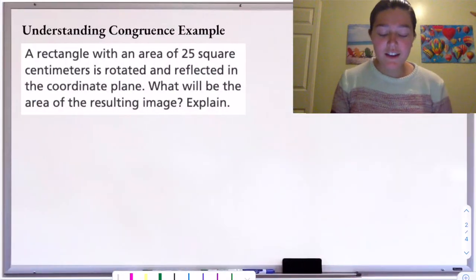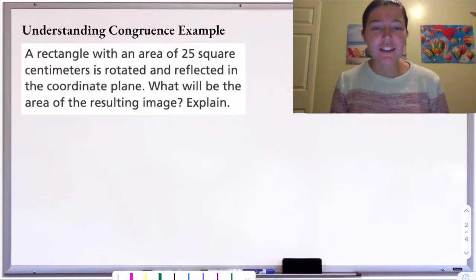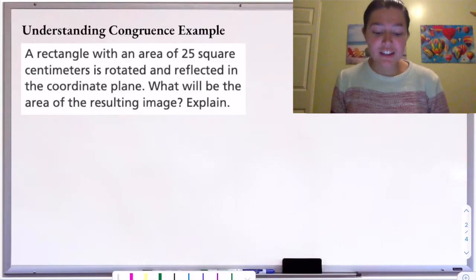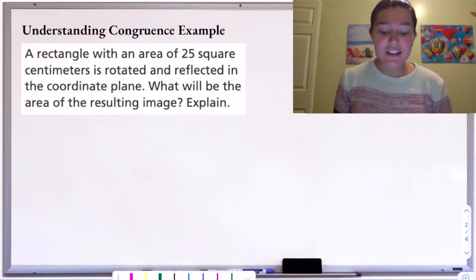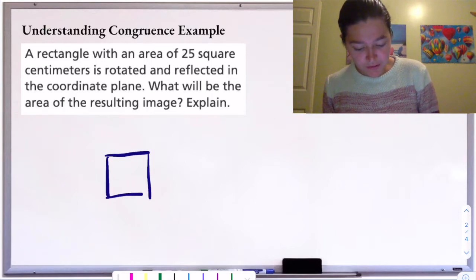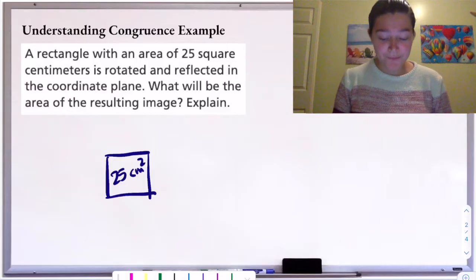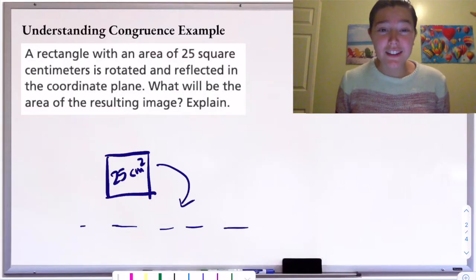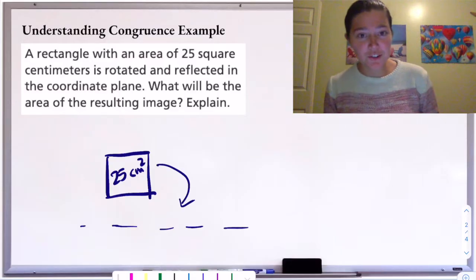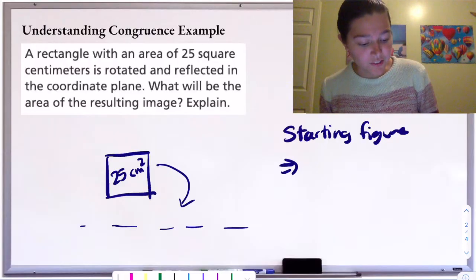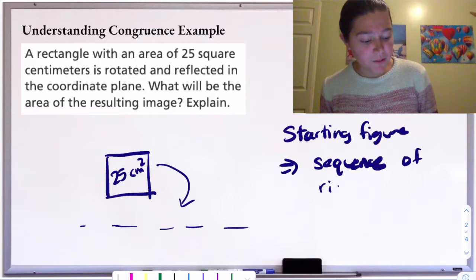Let's see this in action. This question asks: a rectangle with an area of 25 square centimeters is rotated and reflected in the coordinate plane — what will be the area of the resulting image? We don't know exactly the direction of the rotation or reflection, but that doesn't matter, because we have an original figure and we are applying a sequence of rigid transformations — rotating and reflecting.